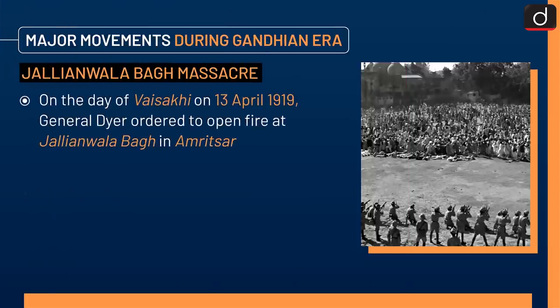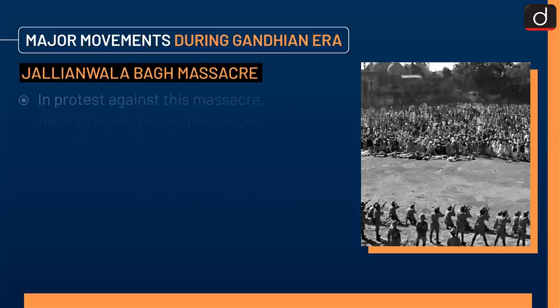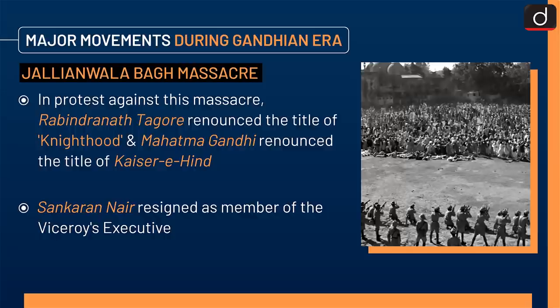Next is the Jallianwala Bagh Massacre. On the day of Baisakhi, on 13 April 1919, General Dyer ordered to open fire at Jallianwala Bagh in Amritsar. The meeting was organized in protest against the arrest of Dr. Satyapal and Saifuddin Kitchlew. In protest against this massacre, Rabindranath Tagore renounced the title of Knighthood and Mahatma Gandhi renounced the title of Kaiser-i-Hind. Sankaran Nair resigned as member of the Viceroy's executive council.